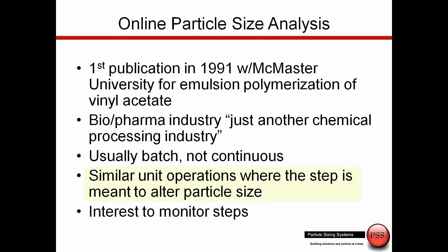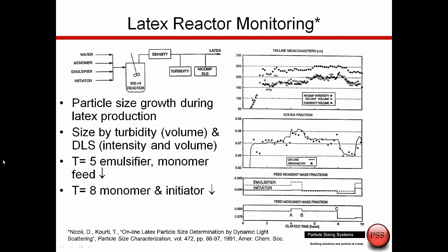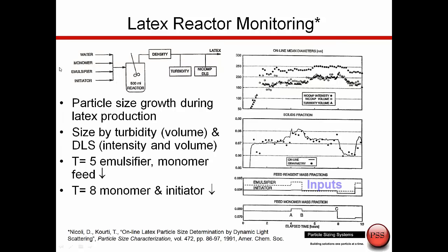Here's information on this first online system, installed in 1991. In this setup we have a reactor with water, monomer, emulsifier, and initiator coming in. Downstream of the reactor we're taking several measurements: a density or gravimetric measurement to understand concentration, and then both turbidity and the online NICOM DLS system to look at particle size. These are the different inputs, and plotted as a function of time in hours, as they altered these inputs they were looking for the change in concentration and particle size.